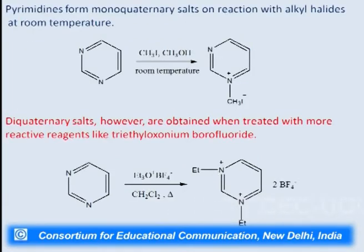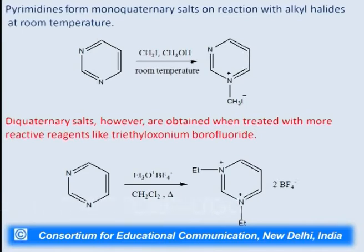Pyrimidine also forms mono-quaternary salts on reaction with alkyl halides at room temperature. Pyrimidine at room temperature on reaction with methyl iodide and methanol gives a quaternary salt. Di-quaternary salts are obtained when treated with more reactive reagents like triethyloxonium borofluoride, in which case the second nitrogen also forms a salt.